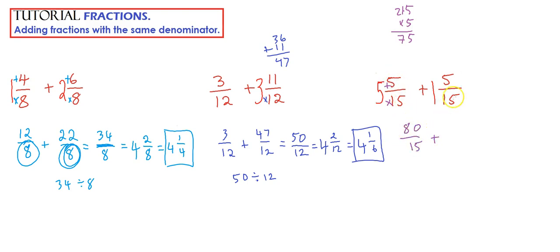so 80 fifteenths, plus, here we have 15 times 1, plus 5, well, that would give us 20, so 20 fifteenths.